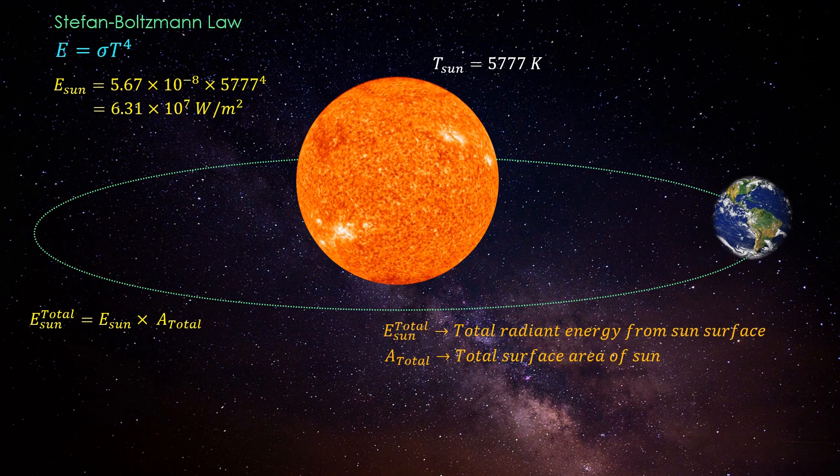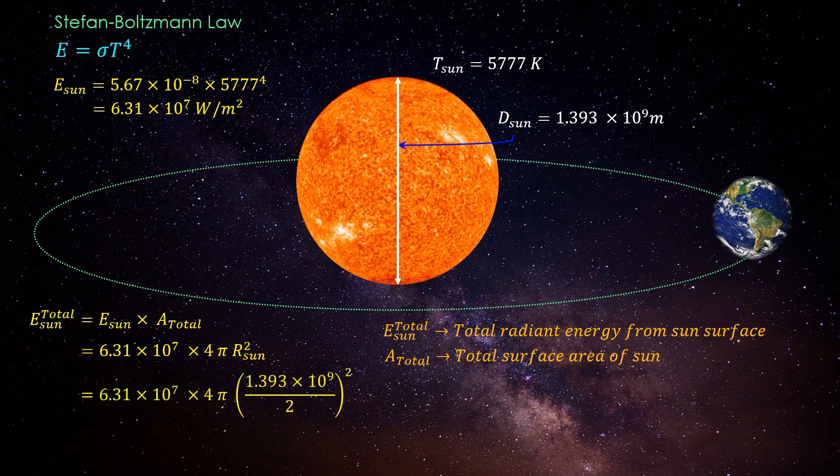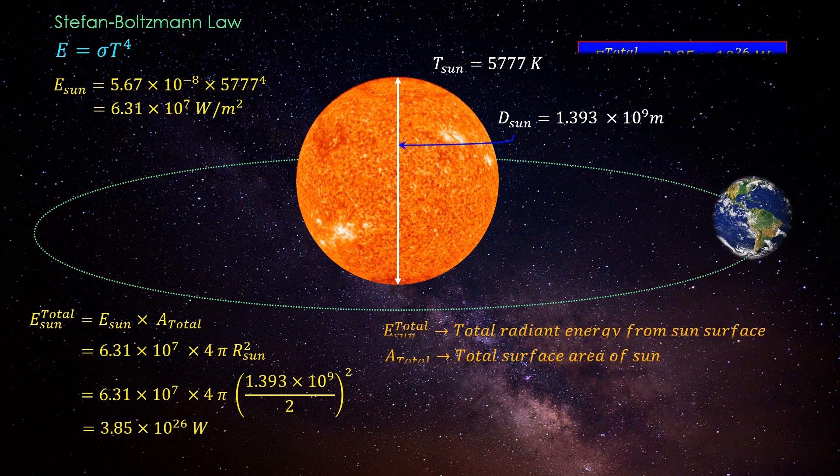Considering sun to be a sphere, we can write surface area of sun as 4πr² where r is the radius of the sun. Sun has a diameter of 1.393 times 10 to the power 9 meter. Putting the values, we get the total radiant energy emitted by sun equal to 3.85 times 10 to the power 26 watts.